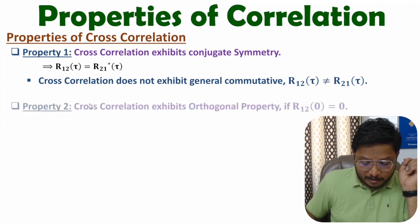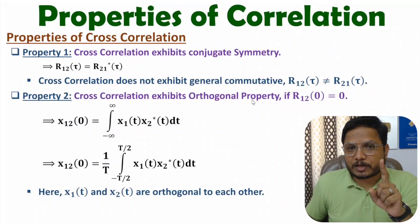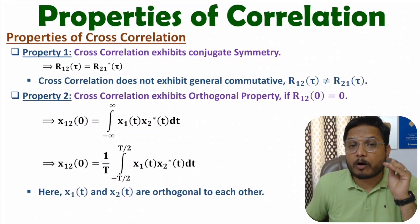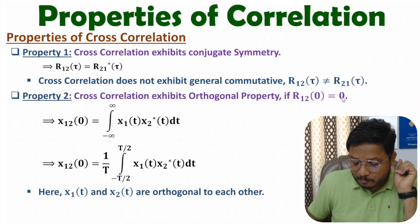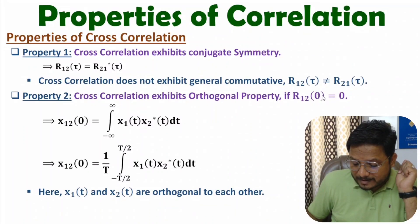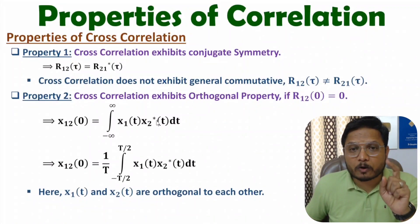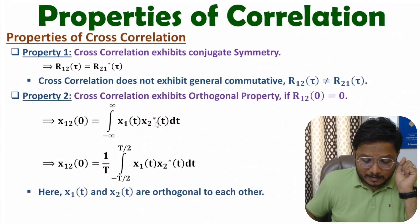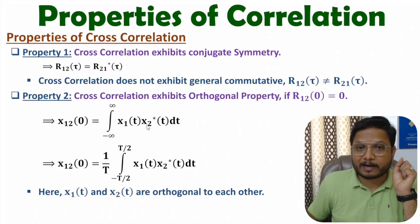The second property of cross correlation is based on orthogonality of two signals. Based on cross correlation, one can identify orthogonality. If R₁₂(0) equals zero — meaning the delay parameter τ is zero — and if the cross correlation R₁₂(0) is zero, then one can say signal 1 and signal 2 are orthogonal to each other.